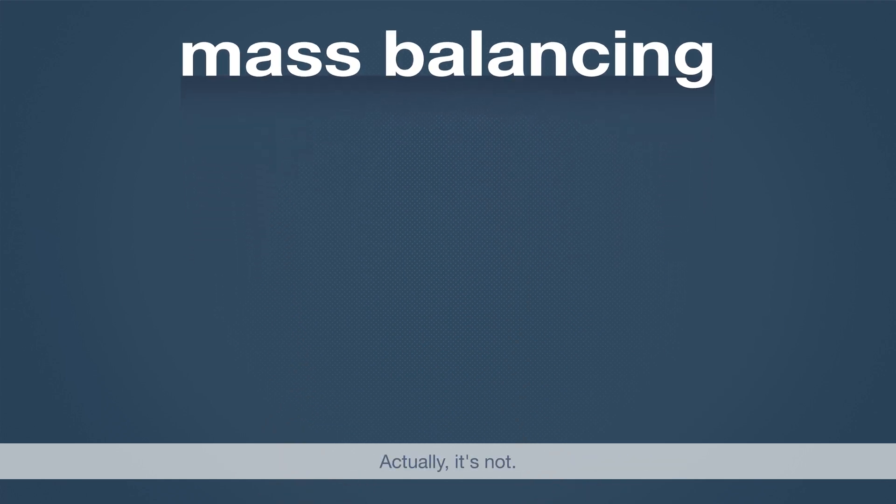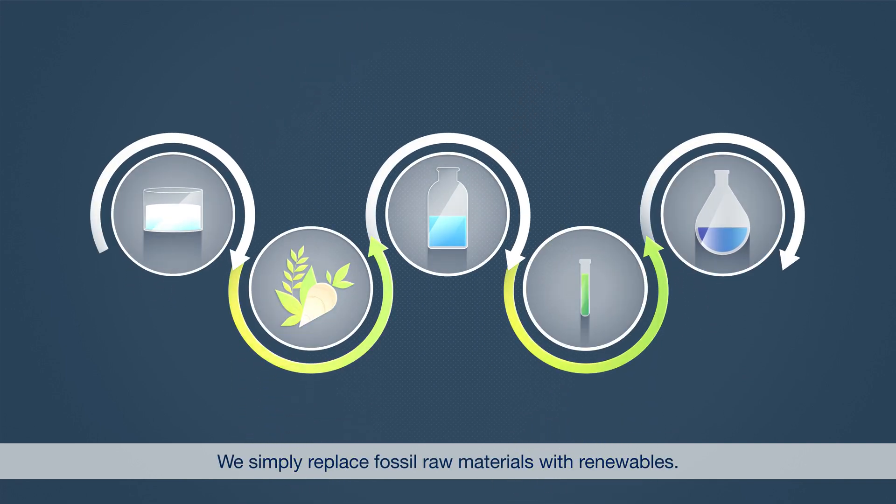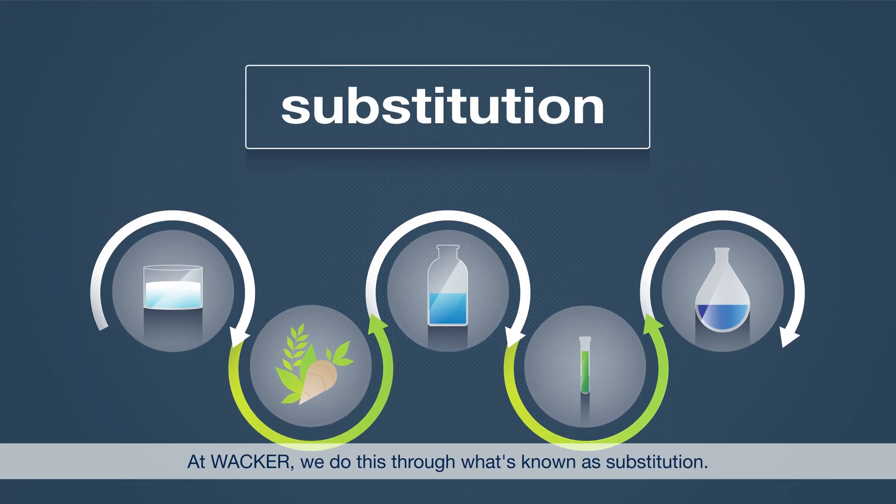Sound complicated? Actually, it's not. We simply replace fossil raw materials with renewables. At WACKER, we do this through what's known as substitution.